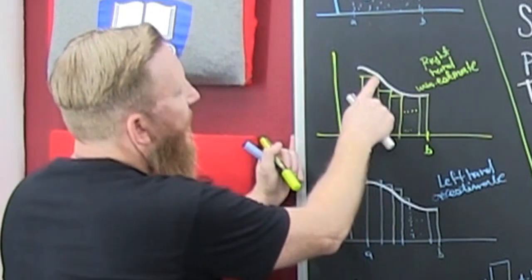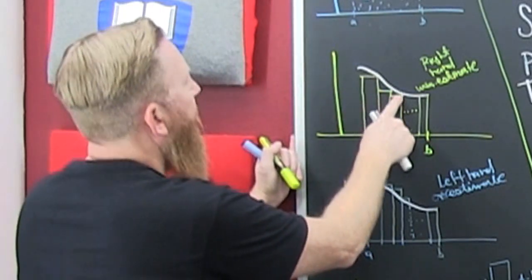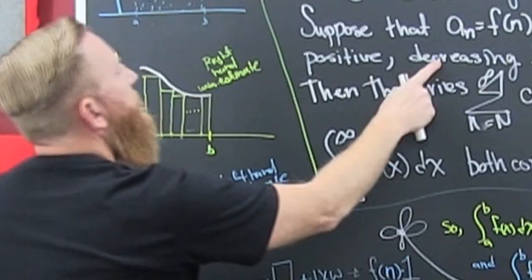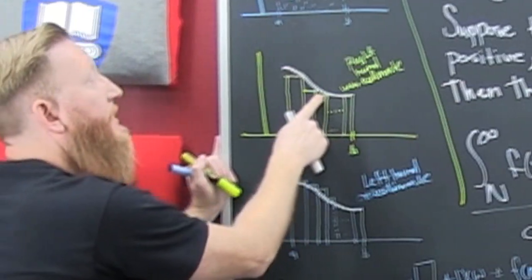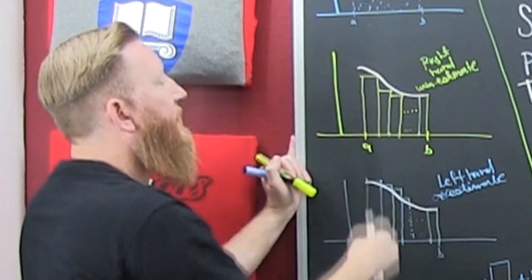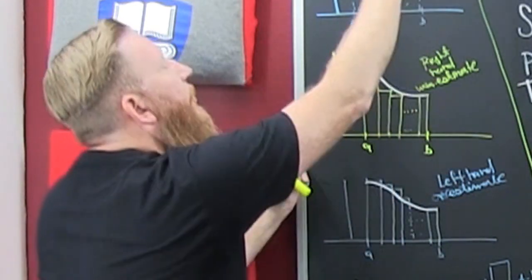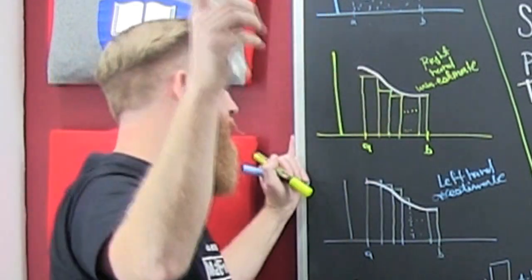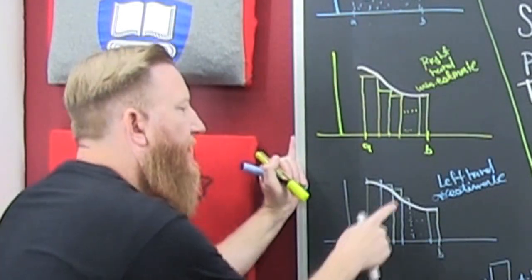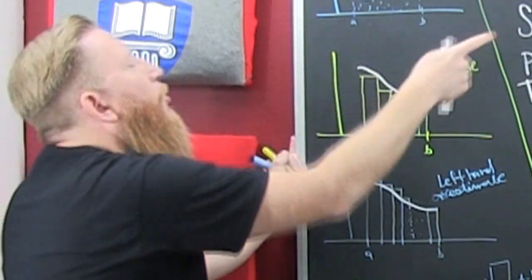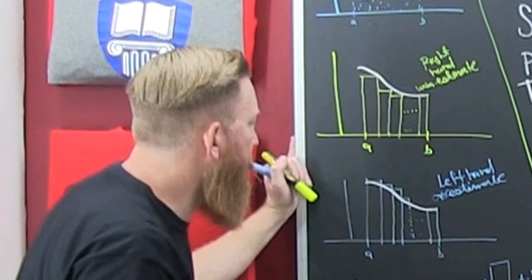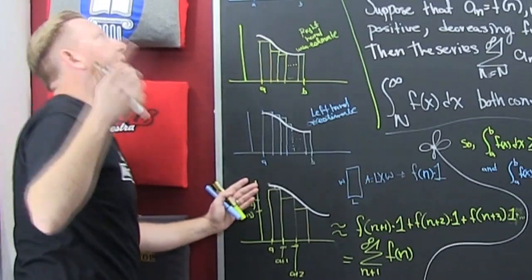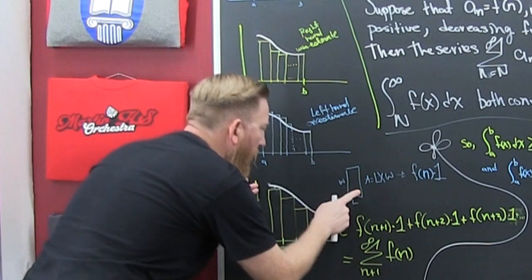Using right-hand endpoints, I talked about how we needed our function to be decreasing so that all of these are lower estimates. We don't want some over and some under — we want them all under. Or we can do a left-hand estimate and have them all over. That's what the important part about decreasing is.